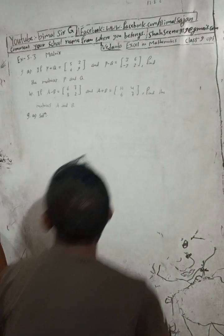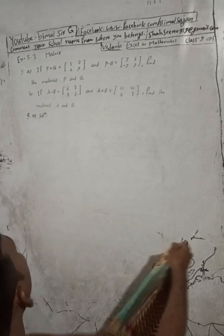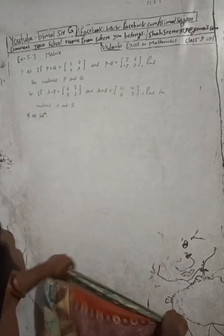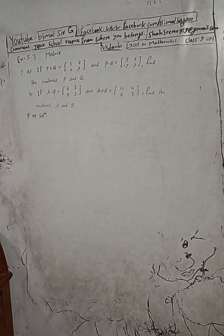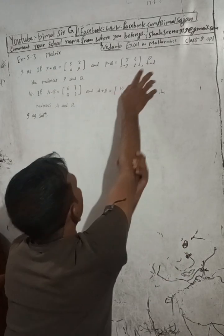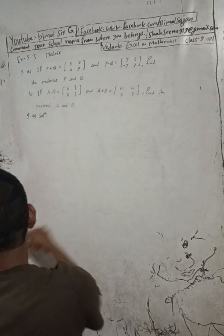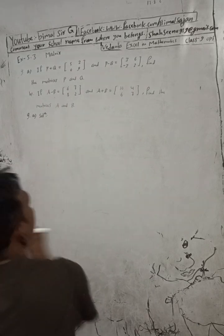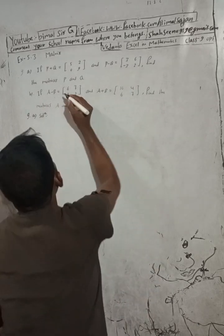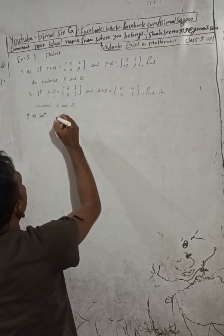Here the question is 9a: if P plus Q is equal to the matrix [5, 2; 0, 9] and P minus Q is equal to [3, 6; minus 3, 2, 5], find the matrices P and Q. Here is the 9a solution.